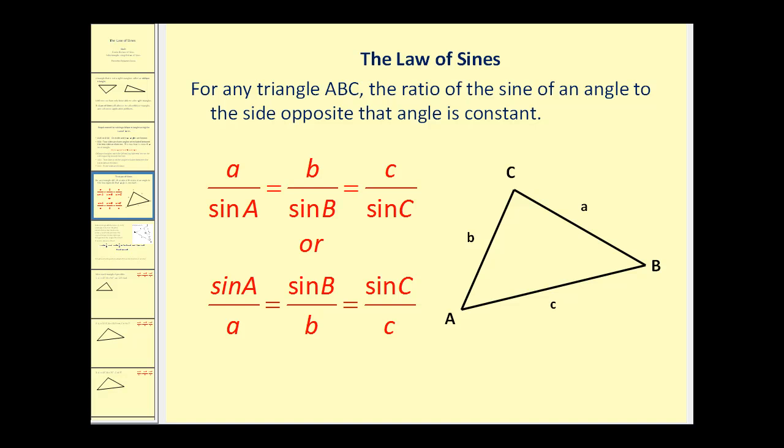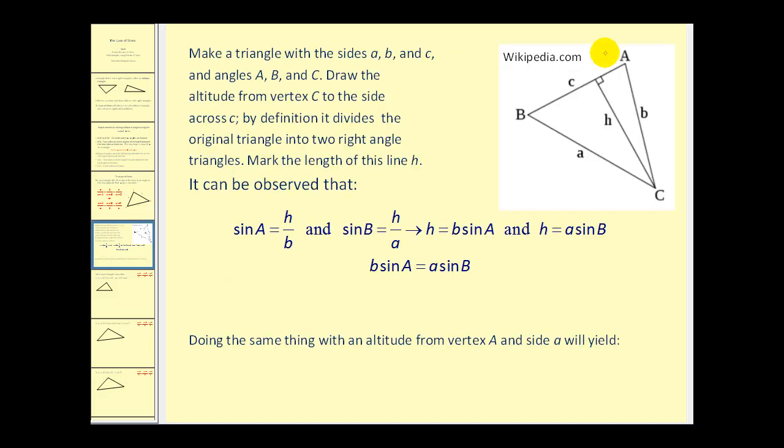Let's go ahead and see if we can actually derive the law of sines. If we have any triangle ABC and construct an altitude from vertex C to the opposite side, notice what happens is we form two right triangles. So we could say the sine of angle A is equal to H over B in this small right triangle. And we could also state that the sine of angle B is equal to H over A in the larger right triangle.